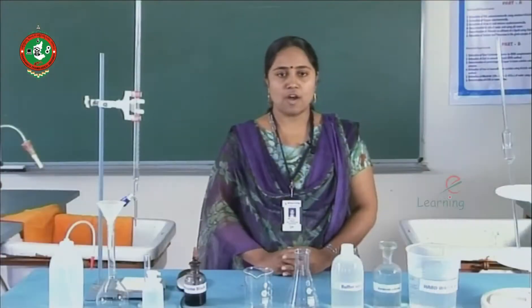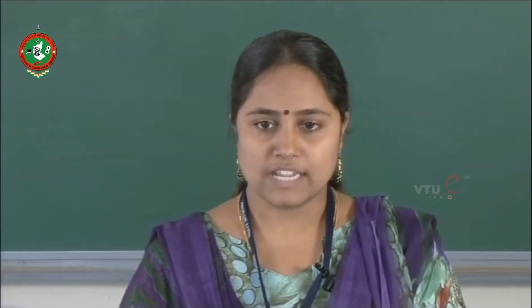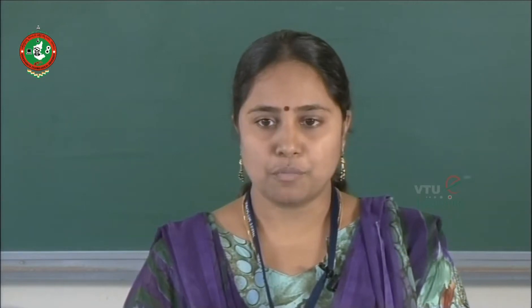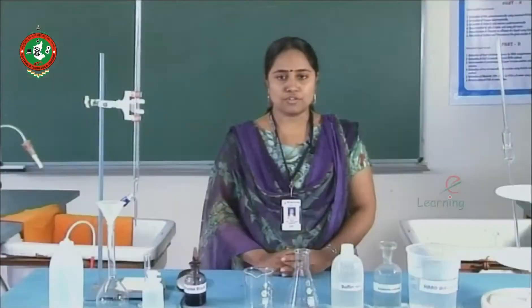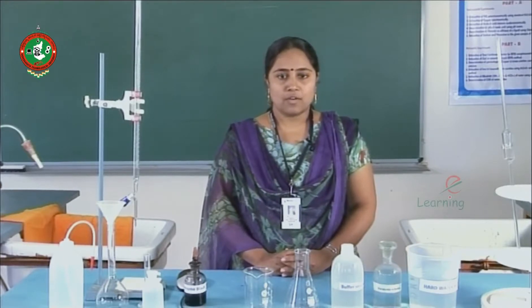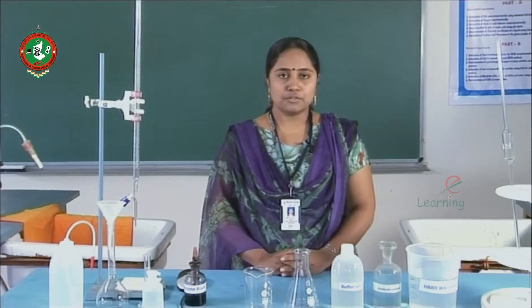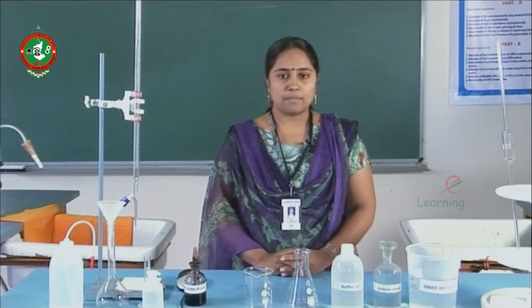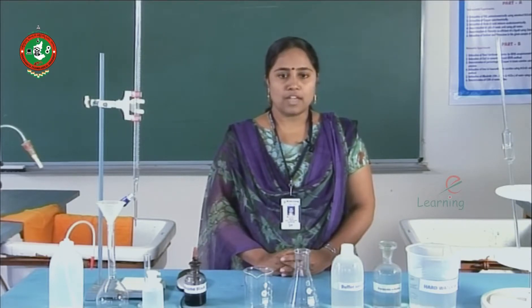Now let us know how the pipette is washed. Wash the pipette thoroughly with tap water. Rinse it once with a small quantity of deionized water. Now rinse it once again with about 10 cm³ of the solution to be pipetted and reject the solution. While transferring the solution from the pipette to the conical flask, hold the pipette straight until the solution drains out. Touch the pipette 2 to 3 times gently to the empty bottom of the conical flask. While transferring the solution, do not blow air through the pipette.